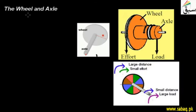First of all, let's see what a wheel is. As shown in the figure, we have a wheel and an axle which passes through it. The radius of the center is less than the radius of the wheel. The radius of the wheel is capital R, and the radius of the axle is small r. This is the center distance.